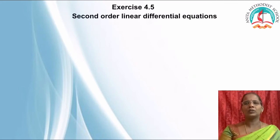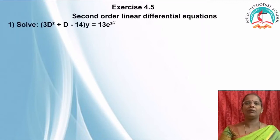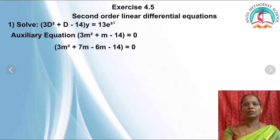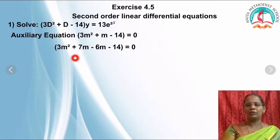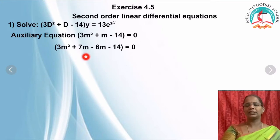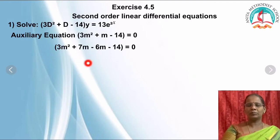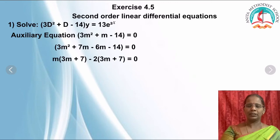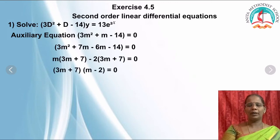Exercise 4.5: you have to solve the second order linear differential equation. Look at this question — this is the second order differential equation and you have to find the solution. To find the solution, you have to frame the auxiliary equation. To frame the auxiliary equation, replace D with M, then factorize: write 7M by splitting the terms. First two terms, M is common; last two terms, minus 2 is common. So M(3M + 7) minus 2(3M + 7) = 0.